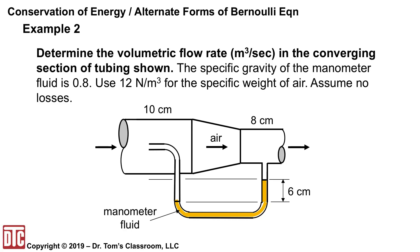Let's look at another orientation. We want to determine the volumetric flow rate in a converging section of tubing with air in it. The manometer fluid has a specific gravity of 0.8 — a bit different from the previous water example. The specific weight of air is given as 12 N/m³. The flow stagnates and pushes the manometer fluid down on one side, raising it six centimeters on the right. Assume no losses.